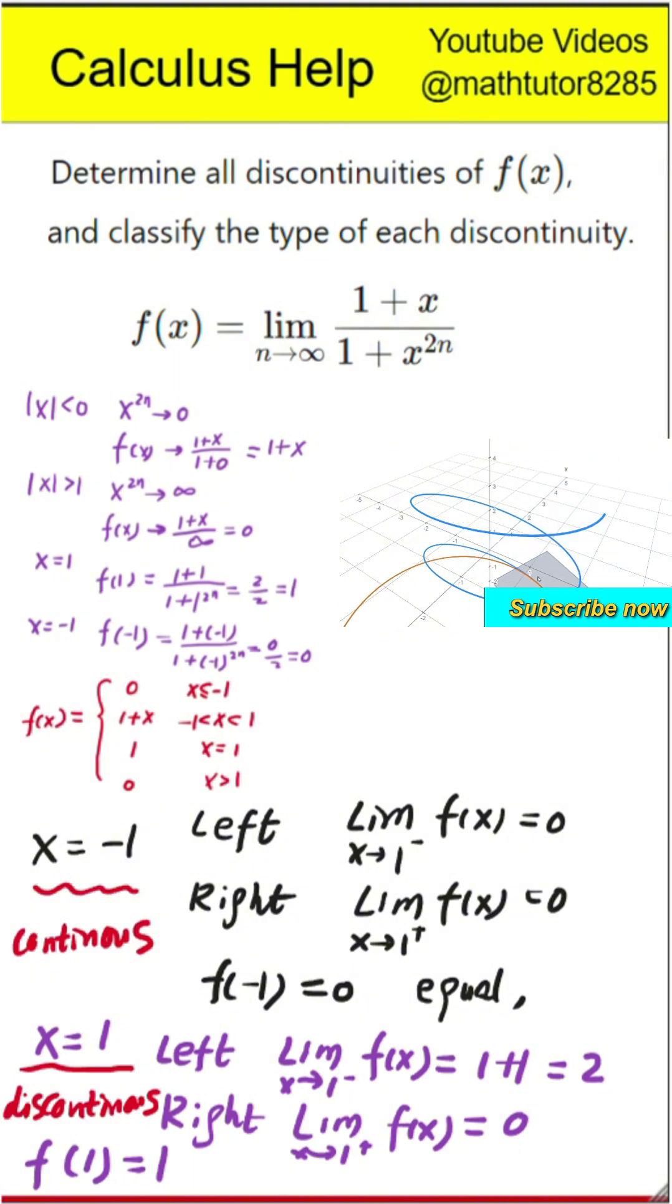Always break down strange-looking limits into zones: less than 1, equal to 1, and greater than 1. This helps you spot discontinuities right where the function's behavior changes.